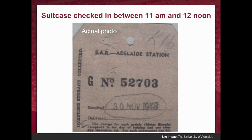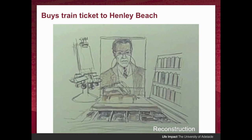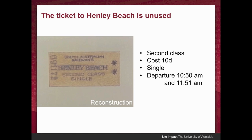From the timestamping on the back of the ticket, we know from station authorities that the bag was checked in anywhere between 10am and 12 noon on the 30th. We know that he then bought a train ticket to Henley Beach from Adelaide train station. This is the train ticket — the strange thing is it was found unused in his pocket. We don't have the actual ticket today, so this is a drawn reconstruction of what it might have looked like. It was a second class ticket.